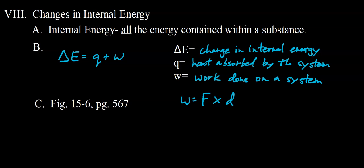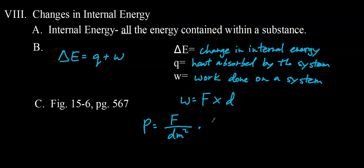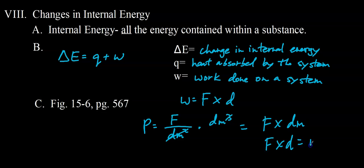For work done by a chemical system, we use P times delta V rather than force times distance. Pressure is force per unit area — force per decimeter squared. Multiplying by volume in decimeters cubed gives force times distance, which equals work. So P times delta V is the same thing as work, and work is done when the moles of gases change during a process.